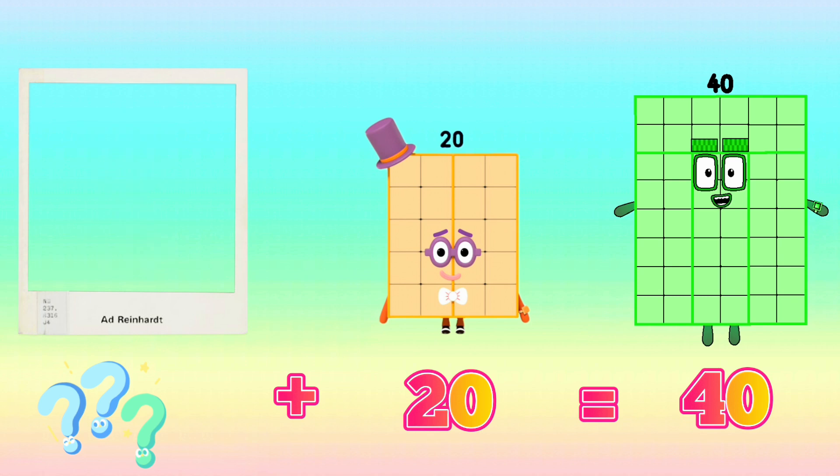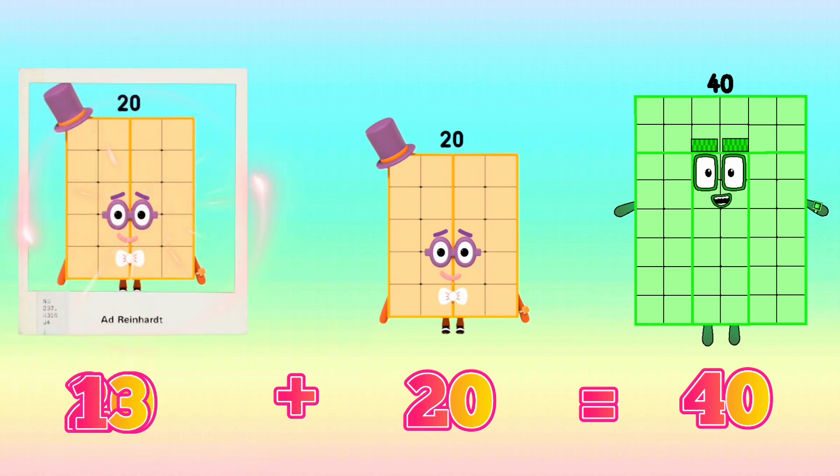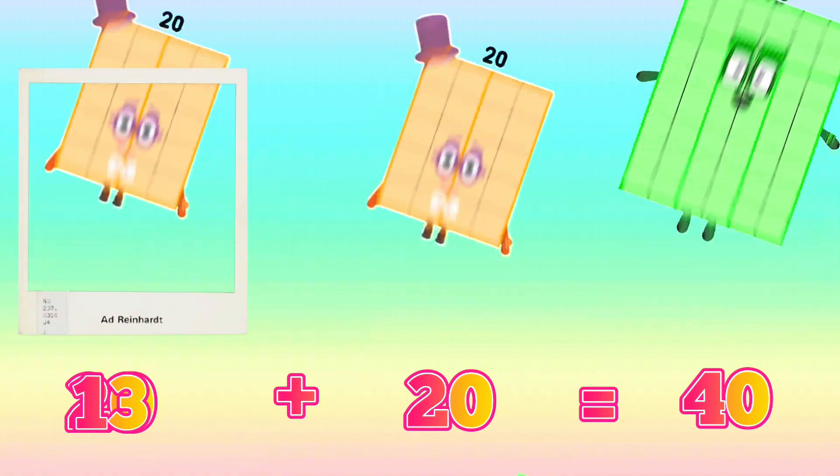What plus 20 is equals to 40? What is the missing addend? If your answer is 20, then you are right! 20 plus 20 is equals to 40.